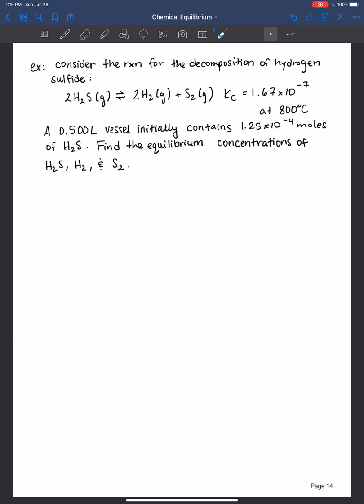We have the decomposition of hydrogen sulfide into hydrogen gas and sulfur gas with an equilibrium constant of 1.67 times 10 to the negative 7th at 800 degrees Celsius. We initially have a 0.5 liter vessel that contains 1.25 moles, and remember this is initial, of our reactant hydrogen sulfide.